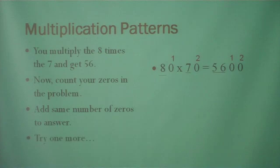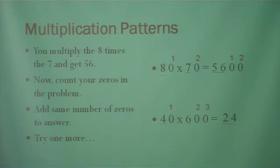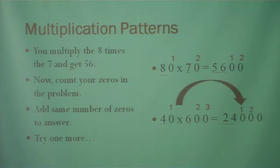Let's try one more: 40 times 600. 4 times 6 equals 24. Now we're going to count our zeros — 1, 2, 3. Now we're going to make sure our answer has the same number of zeros — 1, 2, and 3. And that is our answer.